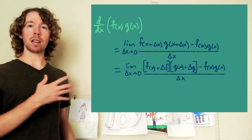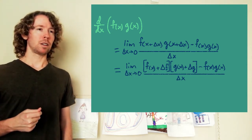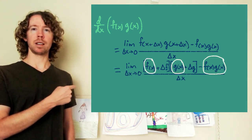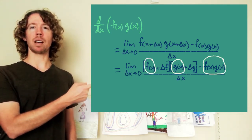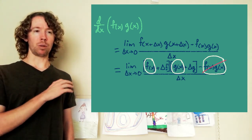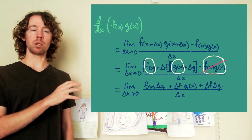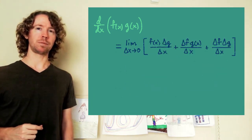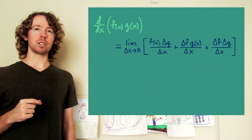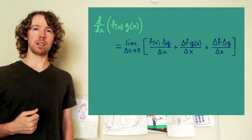When I multiply out the numerator, I see f(x)·g(x) out in front and minus f(x)·g(x) at the end — those cancel. For the remaining terms, nothing else combines, so I'm going to split this into different fractions. For each fraction I'll rewrite it a bit so something nice becomes visible.